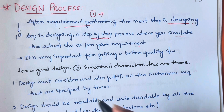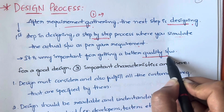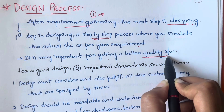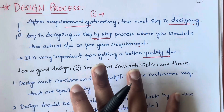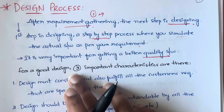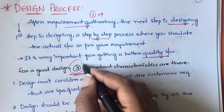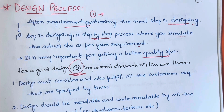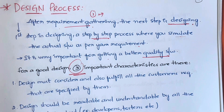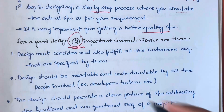This is very important for getting better quality software. In software engineering, for a good design, we have three important characteristics — three important things to note down when it comes to having a good design.